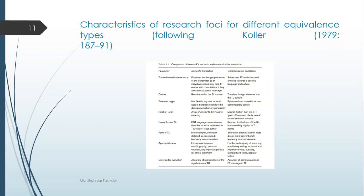In semantic translation, since we are considering connotative and denotative meaning, semantics deals with meaning — the lexical items and the meaning of the whole sentence. In communicative translation, it depends on whether the idea has been communicated from the source text to the target text. Communicative translation is very subjective and personal — it is focused on the target text reader, the person for whom I am translating from English to Bengali.